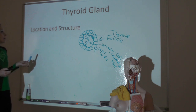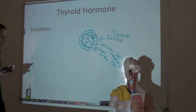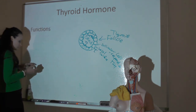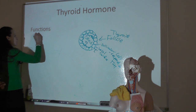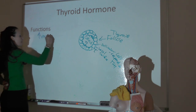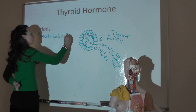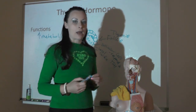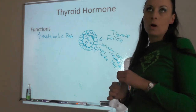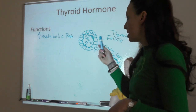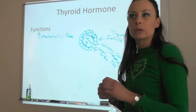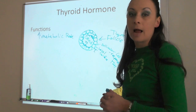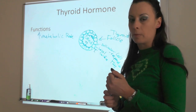Thyroid hormone increases metabolic rate. Most cells in your body have receptors for thyroid hormone. It can be hard to understand what this means until you look at people who have hyper-functioning or hypo-functioning thyroids—then you can see just how important thyroid hormones are.